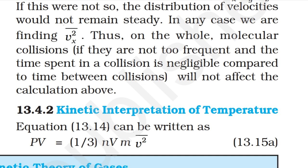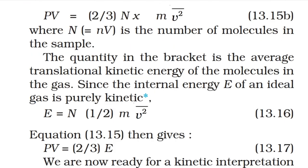Kinetic interpretation of temperature: equation 13.4 can be written as PV = (1/3)·N·m·v̄² = (2/3)·N·(½m·v̄²), where N = n·V is the number of molecules in the sample. The quantity in the bracket is the average translational kinetic energy of the molecules. Since the internal energy E of an ideal gas is purely kinetic, E = N·(½m·v̄²).